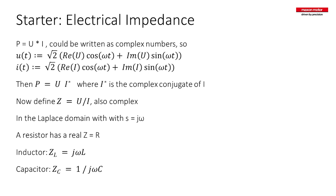As a starter to introduce mechanical impedance, first let's say something about electrical impedance. Electrical impedance starts with power: you can divide power into two quantities — voltage and current. The product of voltage and current is power. You can then divide voltage by current to get a resistance. And if voltage and current may be complex, then you have an impedance. Most of you with an electrical background understand this concept.